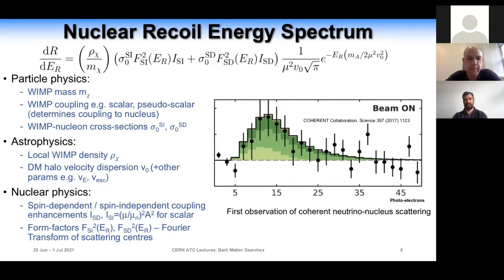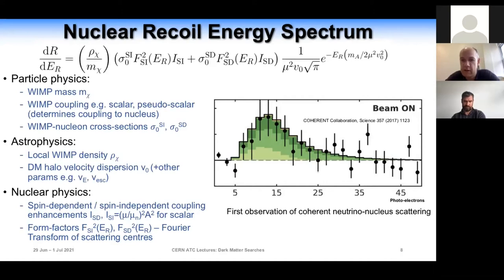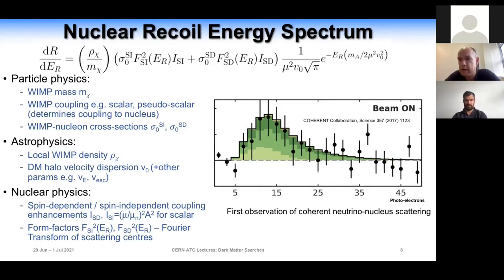This coherent scattering, called the coherence enhancement, has actually been observed for the first time with neutrinos by the COHERENT collaboration. We've now observed coherent neutrino-nucleus scattering, and all we're doing in dark matter searches is looking for coherent WIMP-nucleus scattering. For spin-independent interactions, if you have a very heavy nucleus, the cross-section goes like the mass of the nucleus squared — a big advantage to use heavy nuclei.